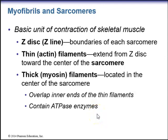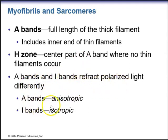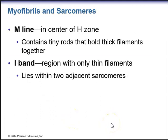The A-bands are the dark bands and make up the full length of the thick myosin filaments, including the inner ends of the thin filaments. The H-zone is the center part of the A-band where no thin filaments occur — only thick myosin filaments. A-bands are anisotropic and I-bands are isotropic, reflecting polarized light differently. The M-line is in the center of the H-zone and contains tiny rods holding thick filaments together. The I-band is the light region containing only thin filaments and lies within two adjacent sarcomeres.